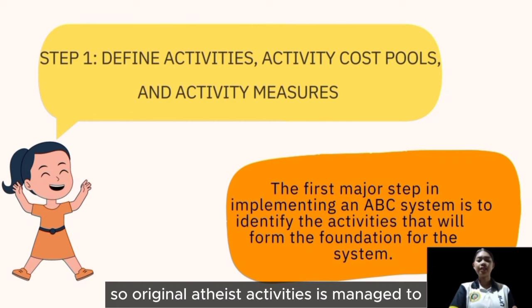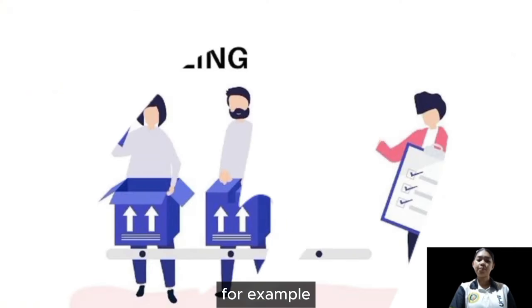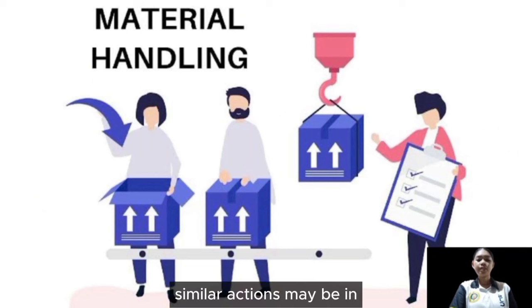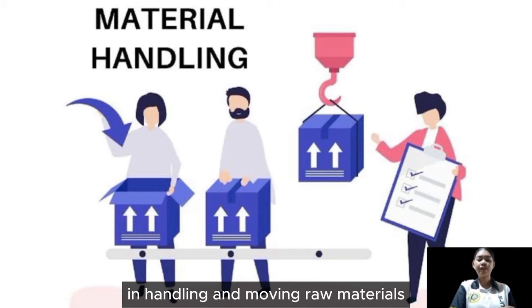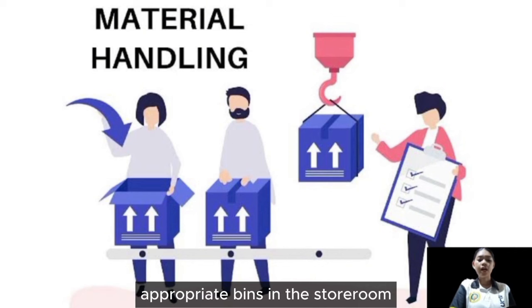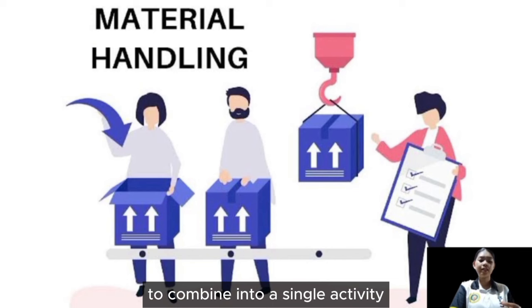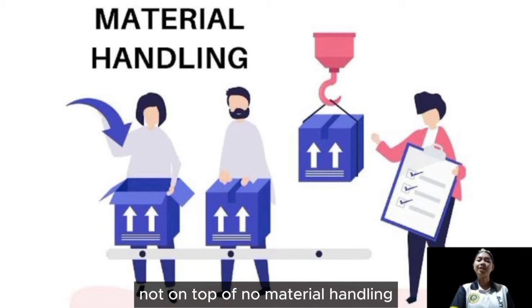The original lengthy list of activities can be reduced to a manageable handful by combining similar activities. For example, several actions involved in handling and moving raw materials — from receiving them on the loading dock to sorting them into appropriate bins in the storeroom — can be combined into a single activity called 'material handling.'